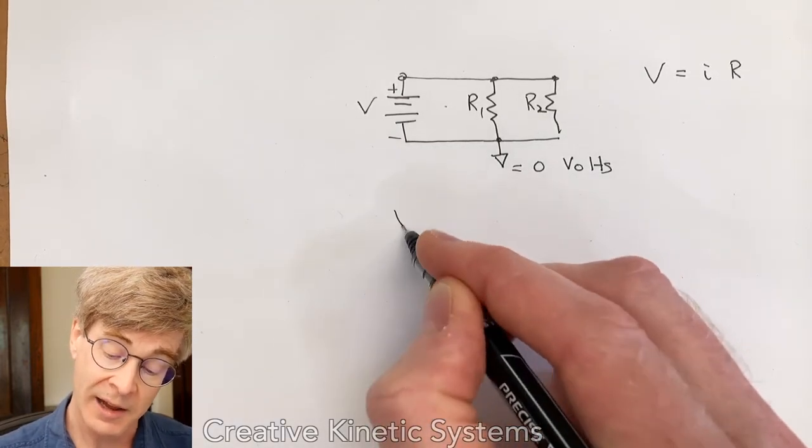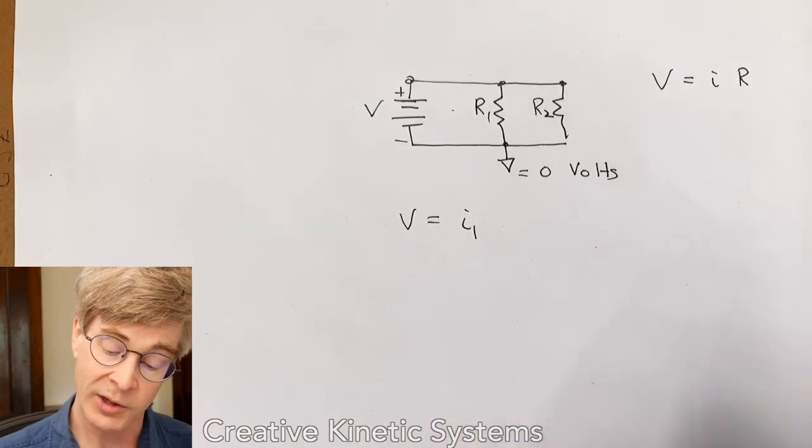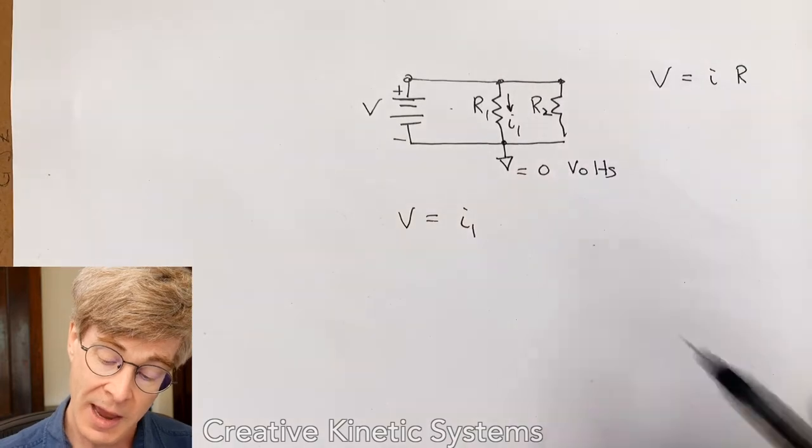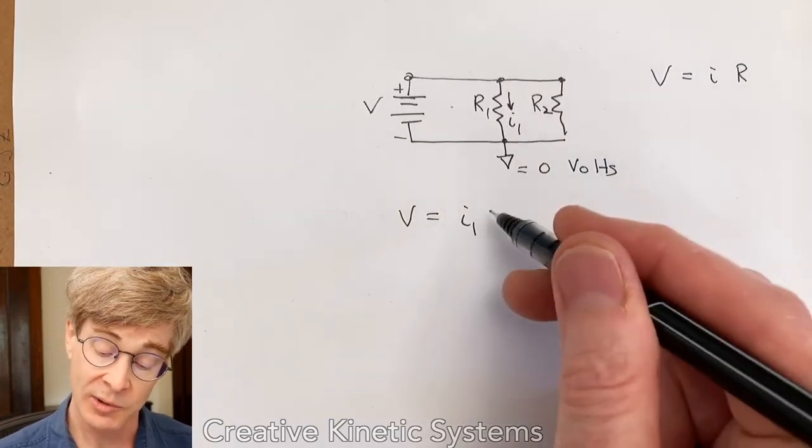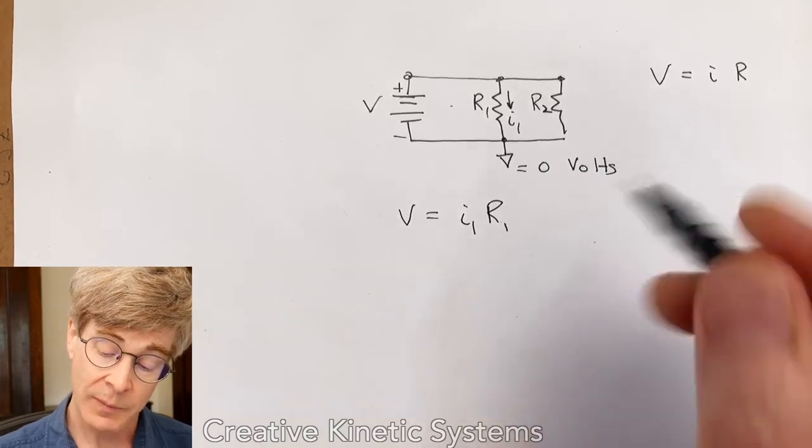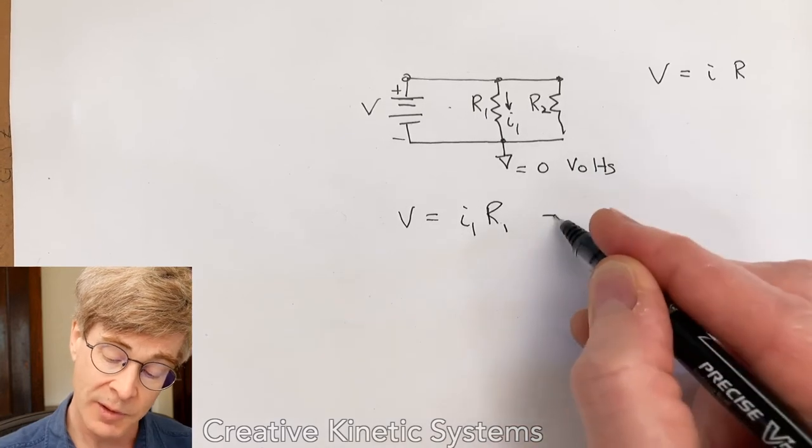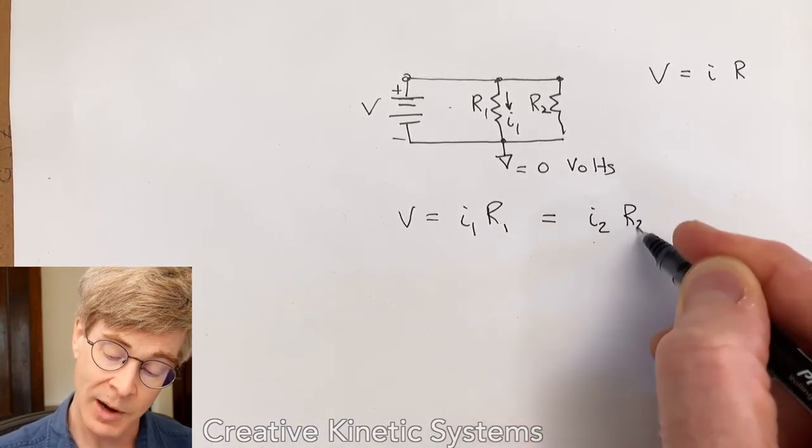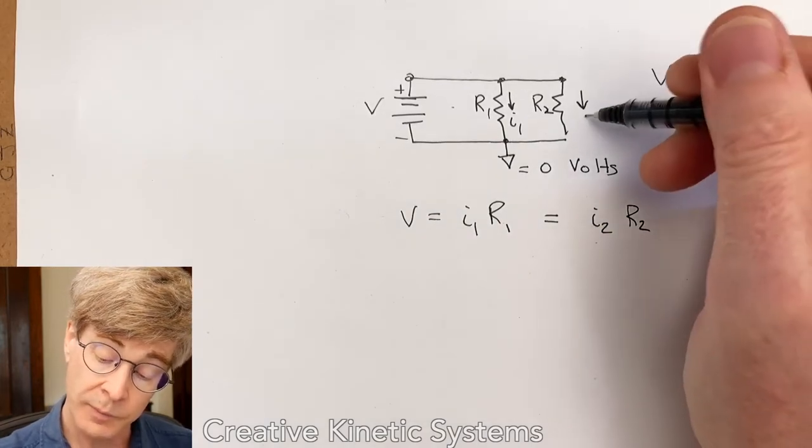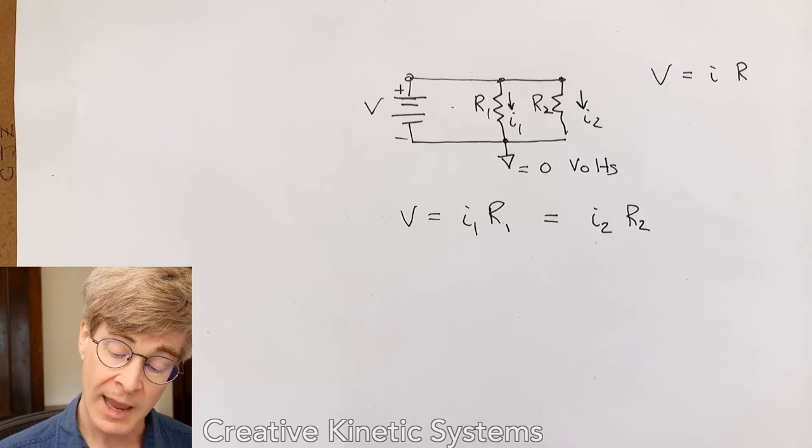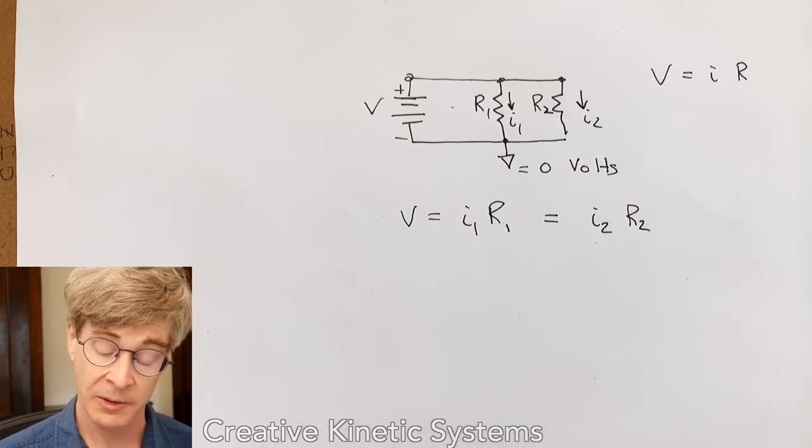So we can think about the currents that must flow. We can say that the I1 current, the current that's flowing through resistor one, I1, let's assume it follows Ohm's law. These are linear resistors. It's going to be the voltage of the battery. I'm sorry. The voltage of the battery is going to equal I1 times R1. And the voltage of the battery is also going to equal I2 times R2, simply because they're attached in parallel across the same battery at the same voltage with these idealized wires.